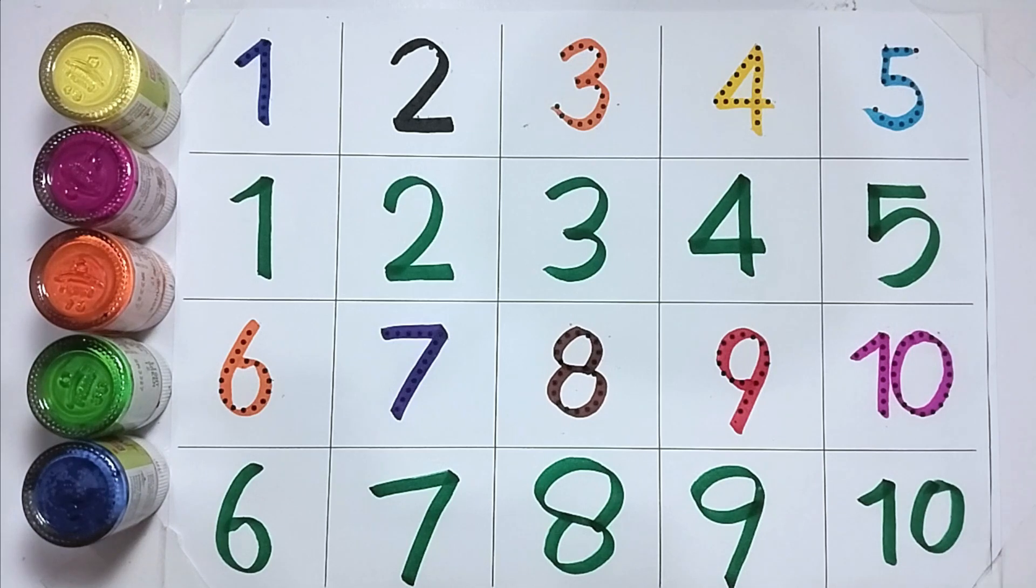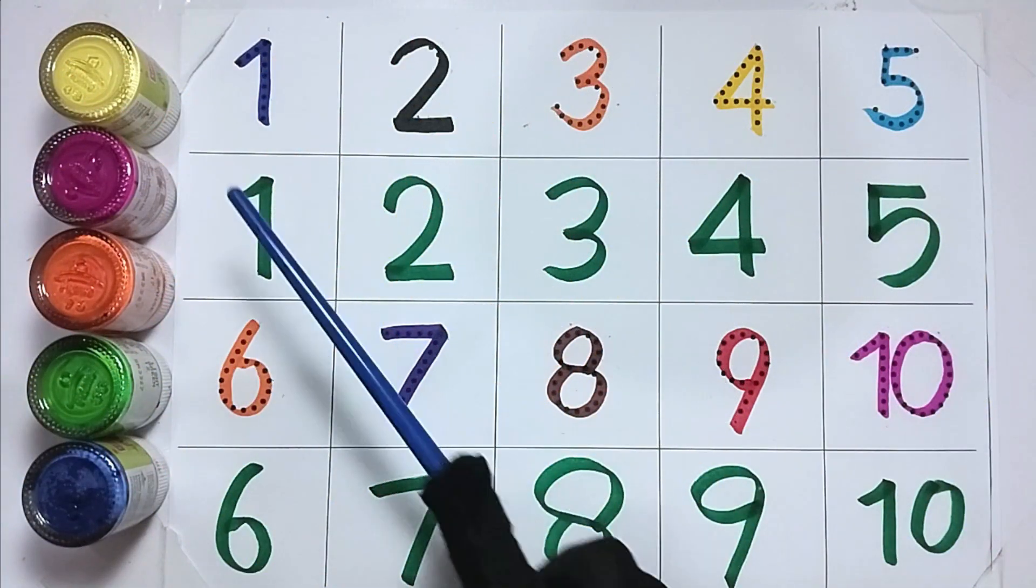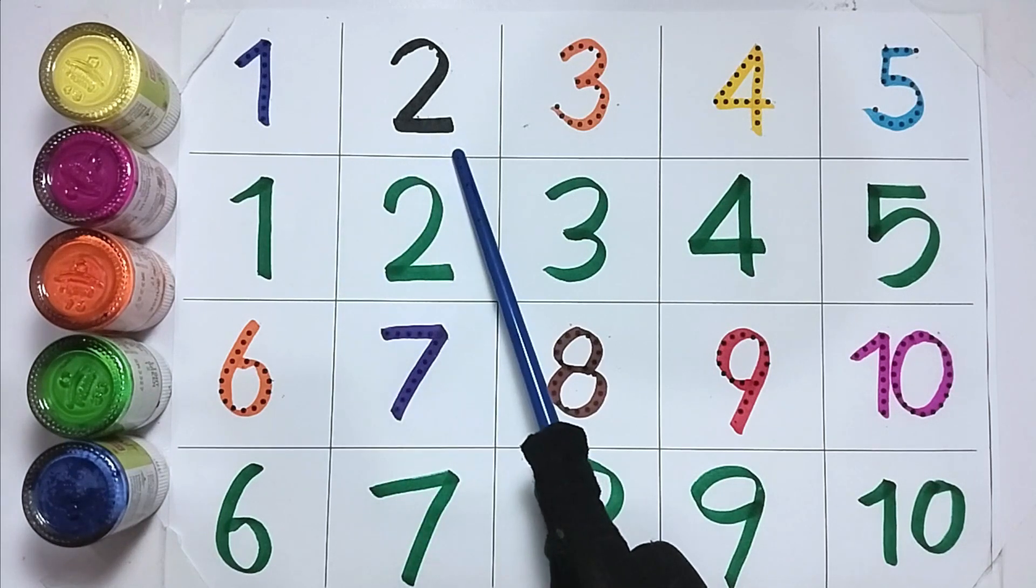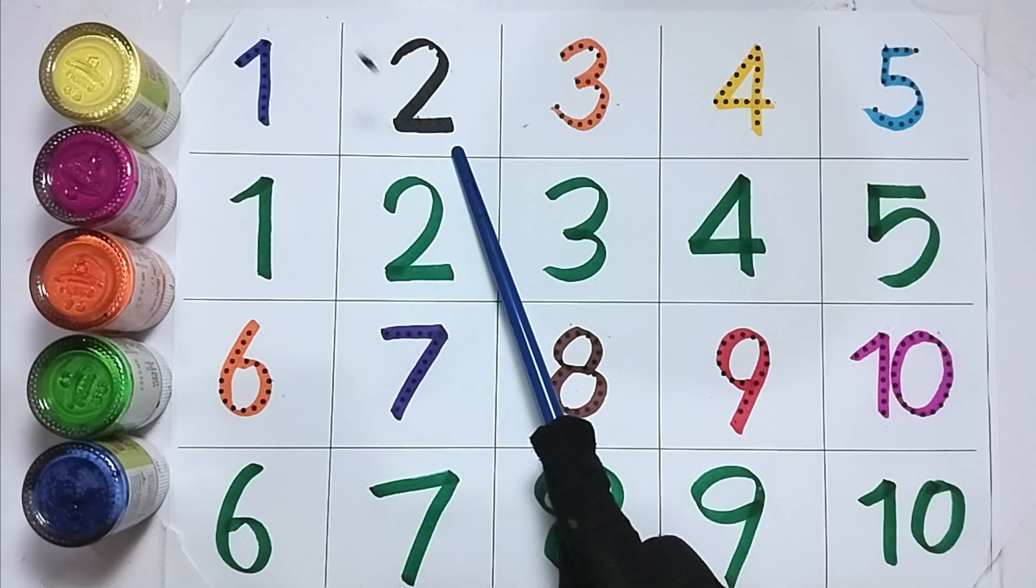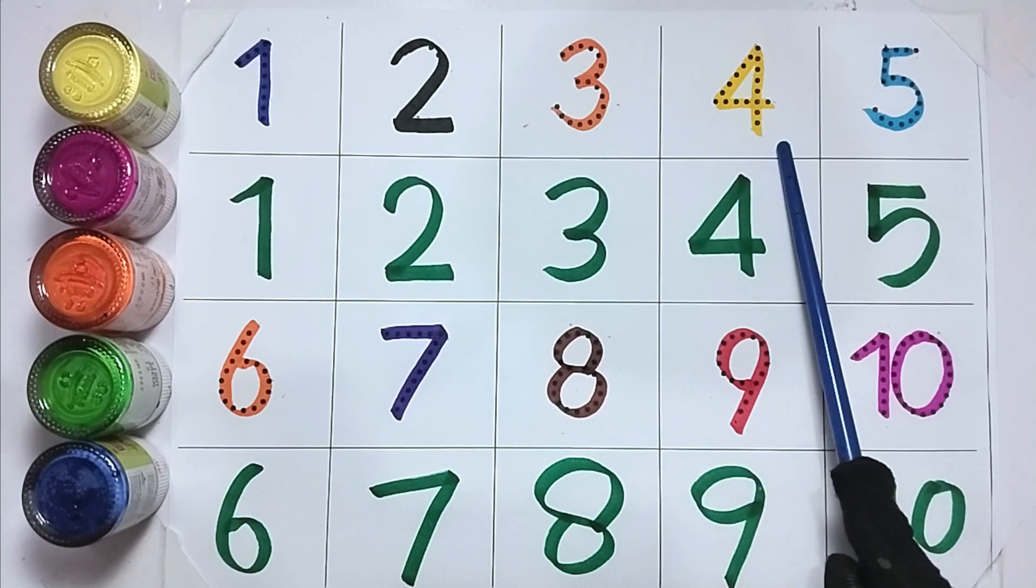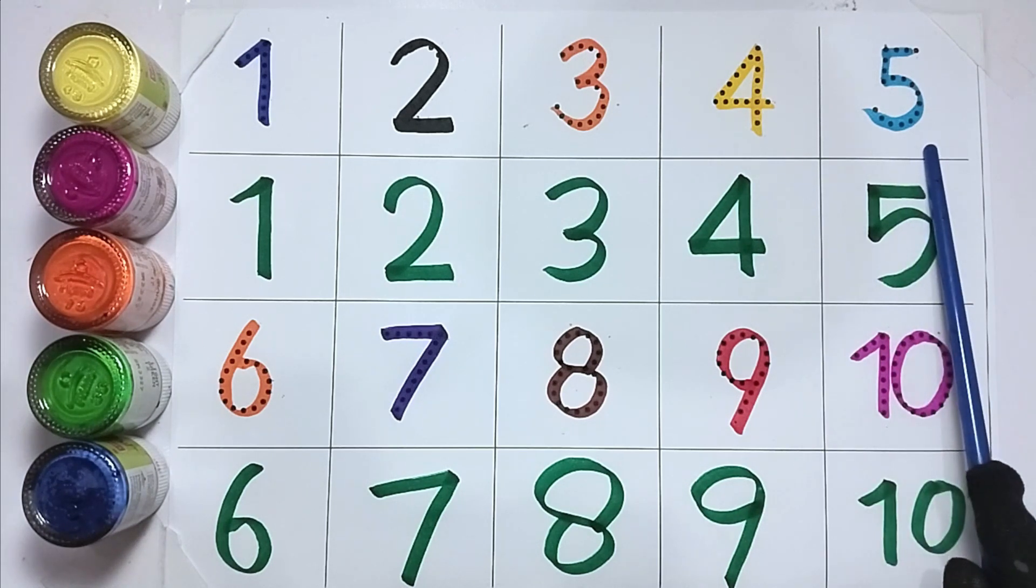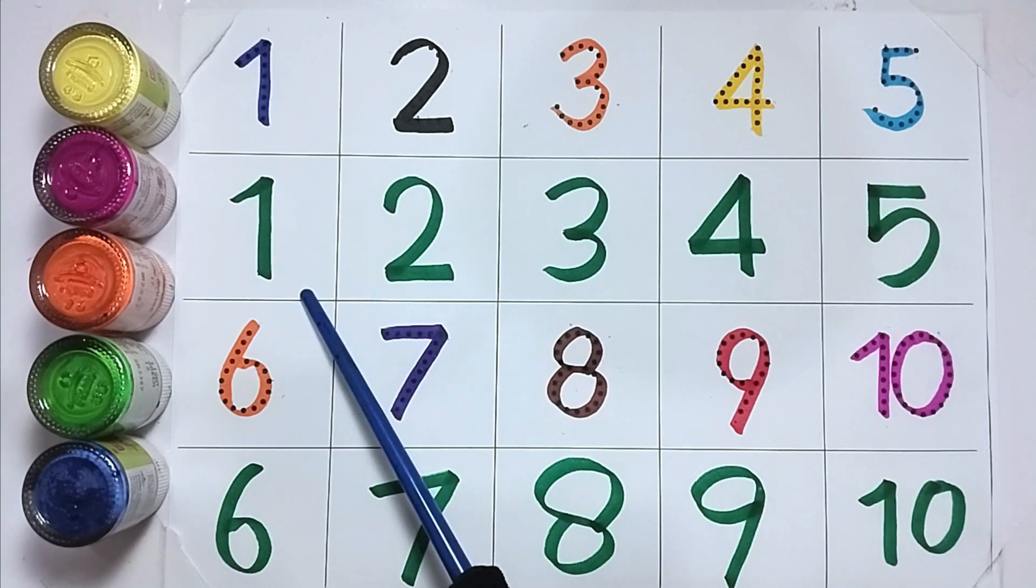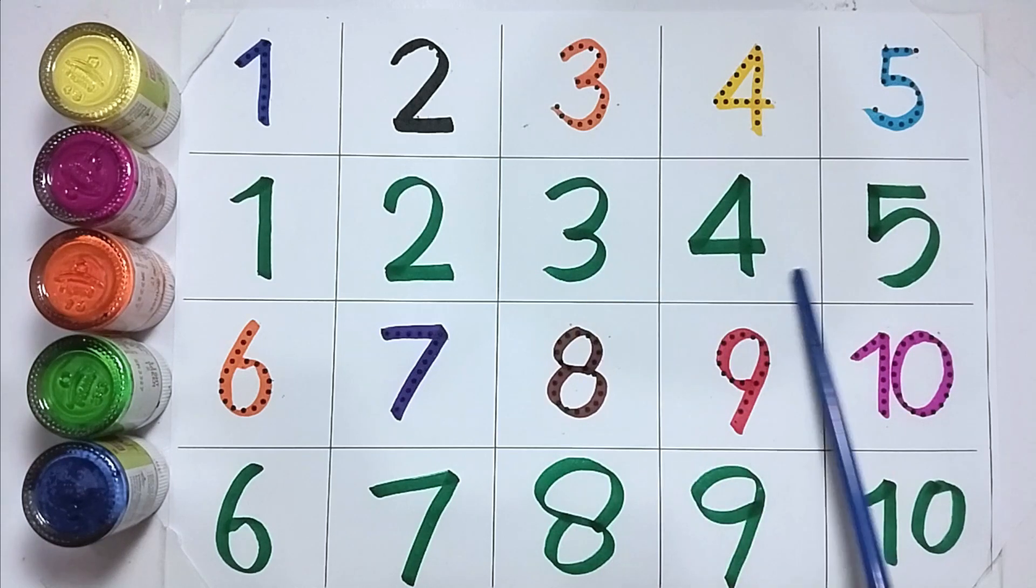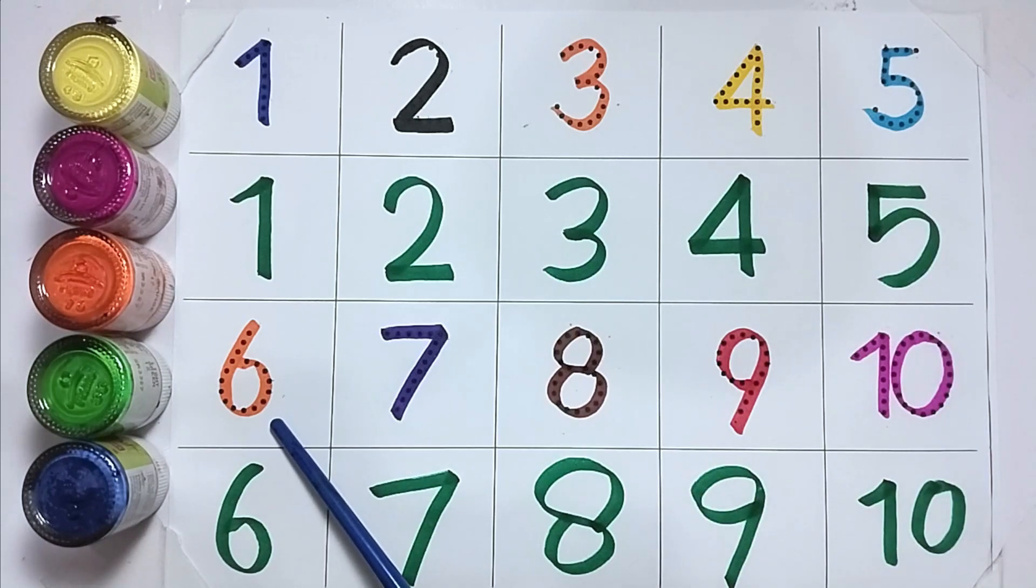1. O-N-E, 1. 2, T-W-O, 2. 3, T-H-R-E-E, 3. 4, F-O-U-R, 4. 5, F-I-V-E, 5. 1, 2, 3, 4, 5, 6.